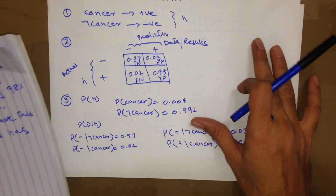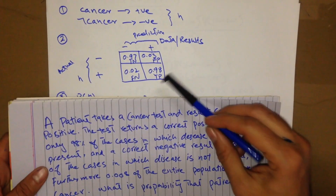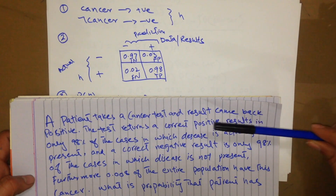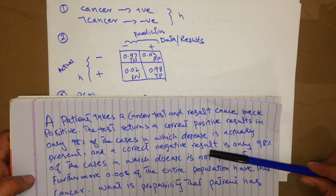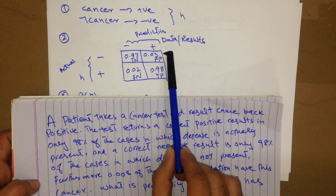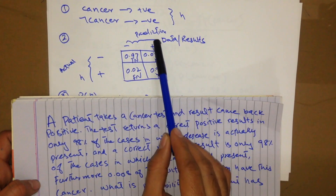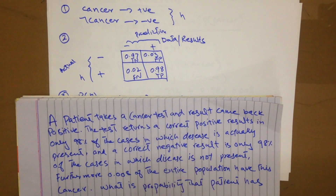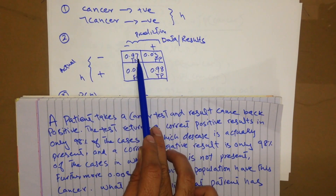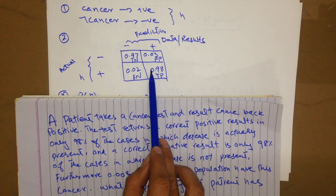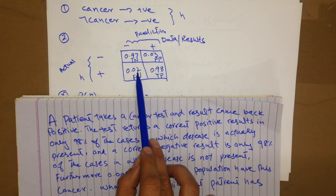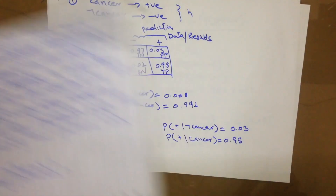In step two, we are going to draw a confusion matrix and fill it with the information given in the question. The question says the correct positive result is 98% of the cases in which the disease is actually present, so when disease is positive the correct positive result is 0.98. And when disease is not present, the correct negative result is 0.97. Based upon 0.97 and 0.98 we can find out the other values by subtracting from one.